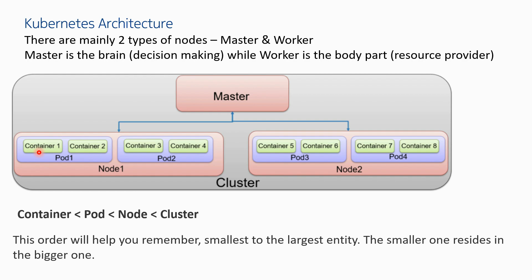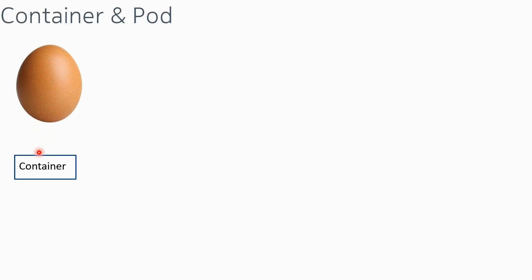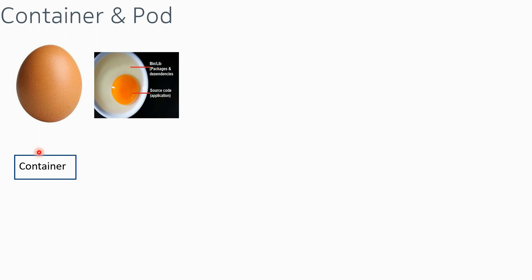The main question is: why is a pod required when the application is running inside a container? What is the function of the pod? A pod is an object which is the smallest entity managed by Kubernetes — Kubernetes manages containers via pods. To understand the difference between a container and a pod, consider the egg analogy: the egg is the container, the egg yolk is your source code or application, and the egg white represents the binaries and dependencies. You cannot have an egg with only the yolk or only the white — it must have both, and the outer shell protects the egg material inside.